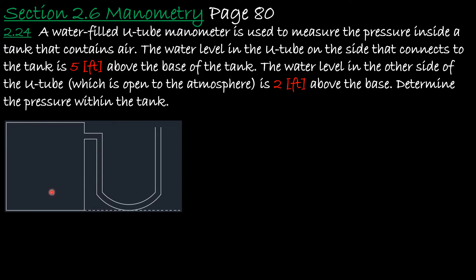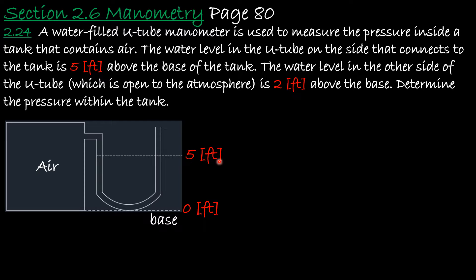Here we have our tank with air inside, and our goal is to find the pressure of the air. This dashed line represents the base of the tank at 0 feet. The side where the U-tube manometer is connected to the tank has a water level at 5 feet. The side open to the atmosphere has a water level at 2 feet. This water is called the gauge fluid — the fluid we use to gauge how much pressure the air has inside the tank.